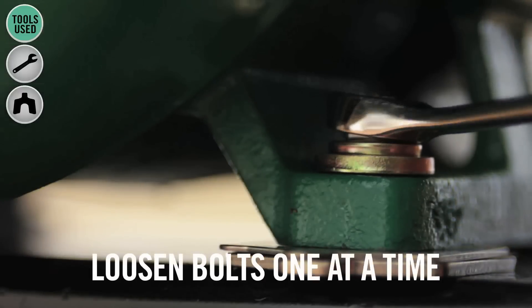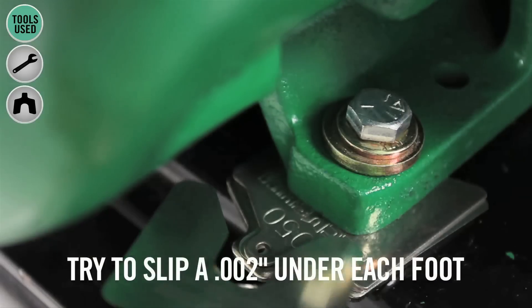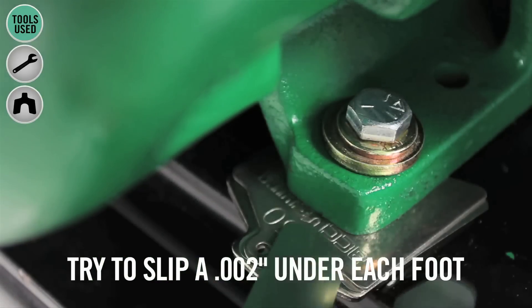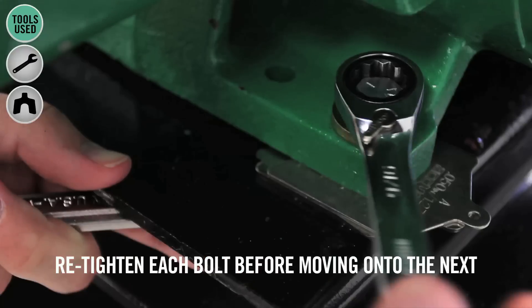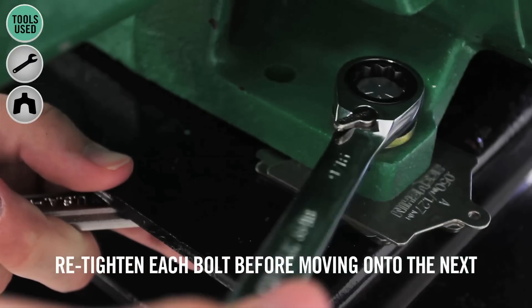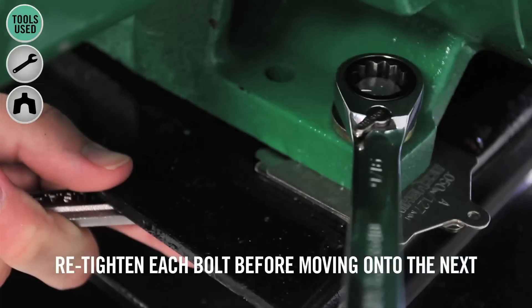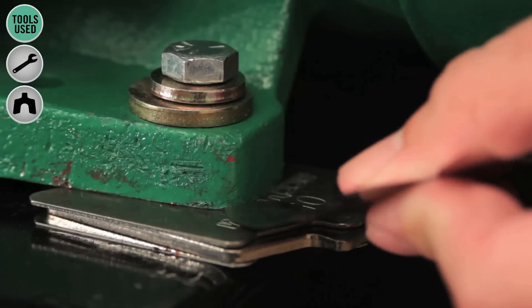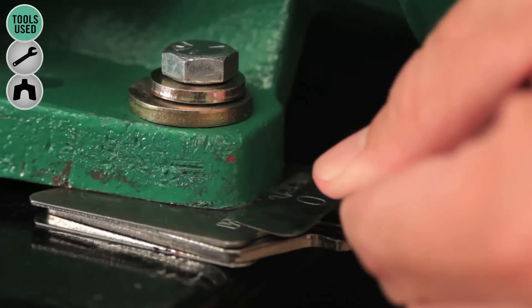Loosen the bolts one at a time and try to slip a 2,000 shim under each foot. When checking each foot, make sure to tighten each bolt before moving on to the next. Add shims if you need to, but if nothing will go under, you will know that you have an equal weight distribution.